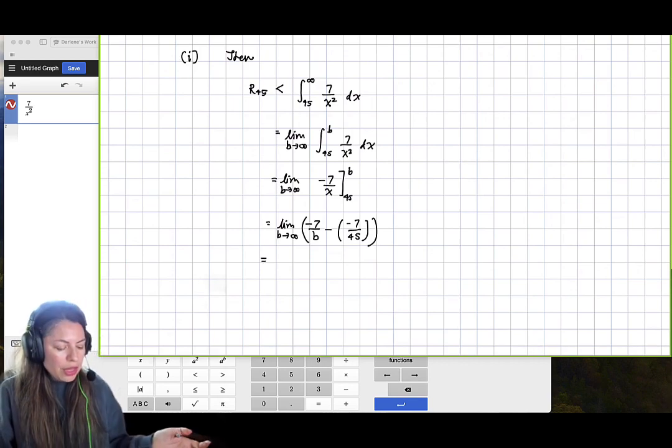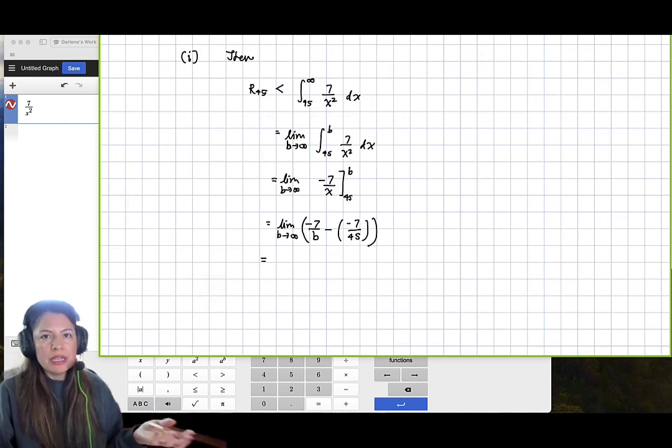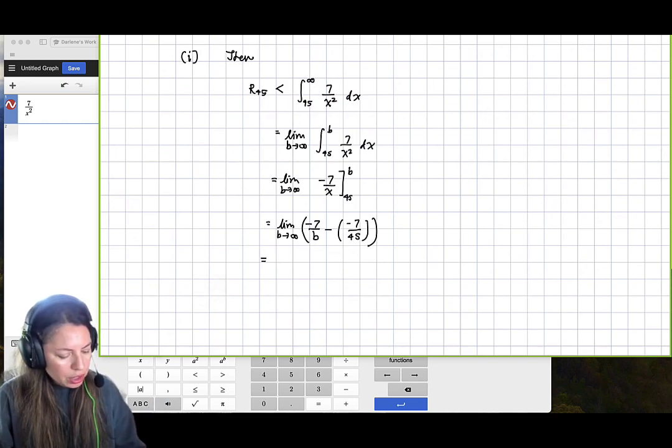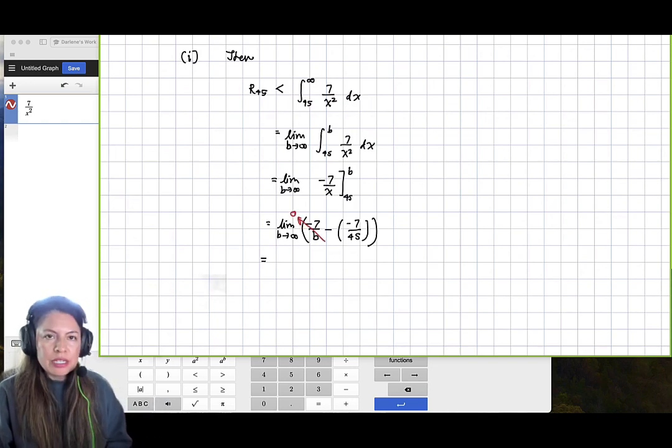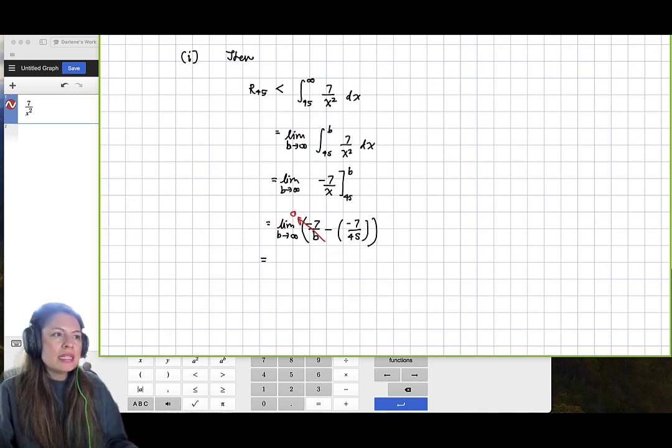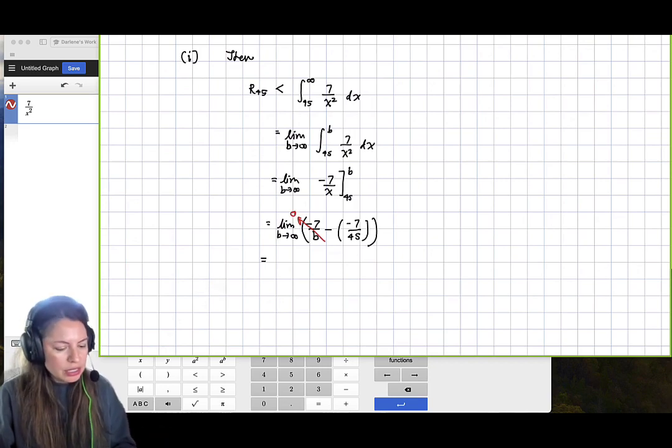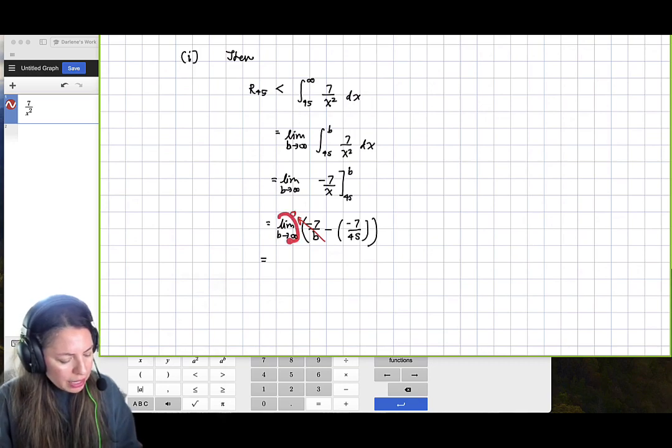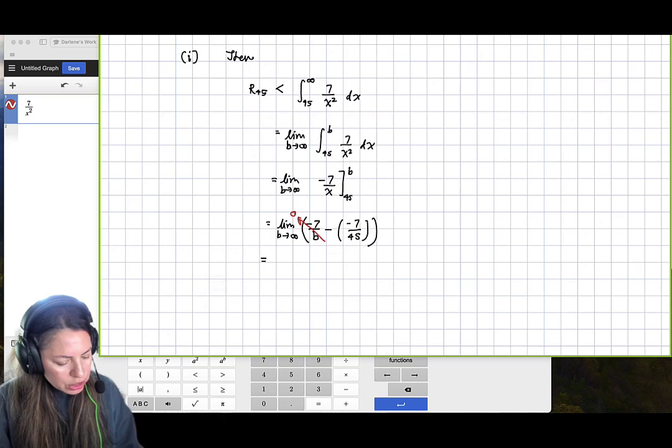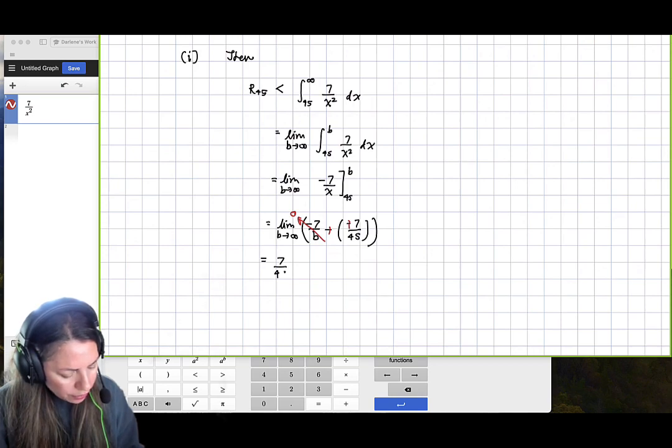So we already know that the limit as b approaches infinity of 1 over b, like that form, it shoots to 0. We learned that in the first semester calculus. And then the limit of a constant is just the constant. So this limit of this constant will just be that constant. What's nice is we do get negative negative. So we end up getting this result to be 7 over 45.